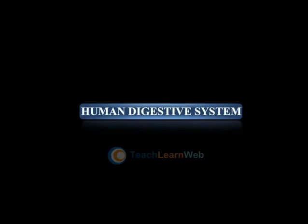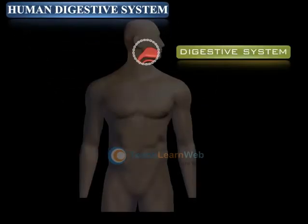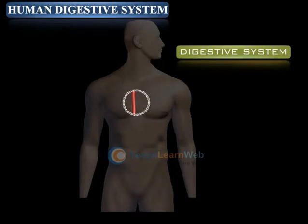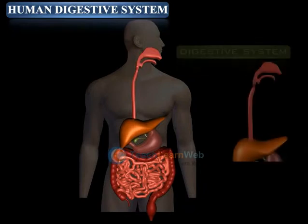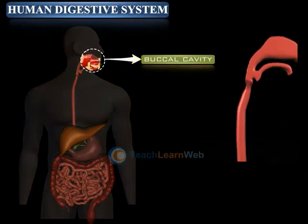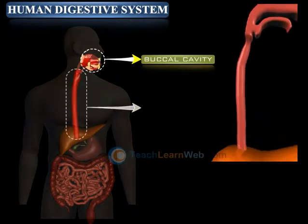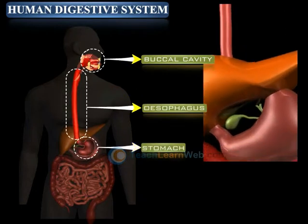Digestion in Humans. The process of digestion in man is carried out in a well-developed system called the digestive system. It comprises the buccal cavity, esophagus, and stomach.